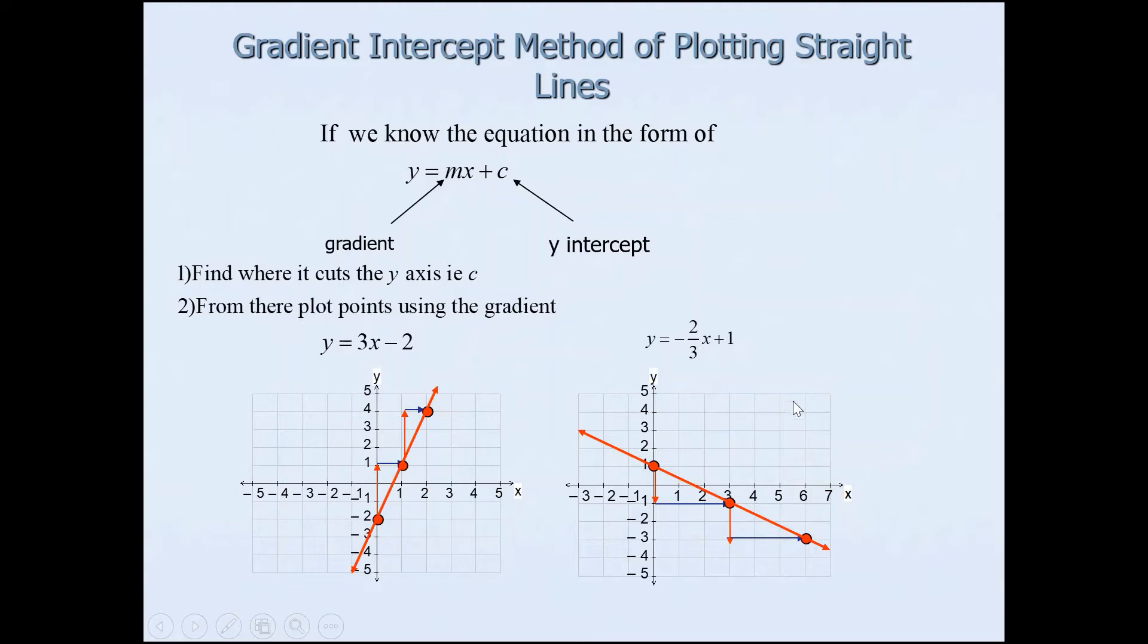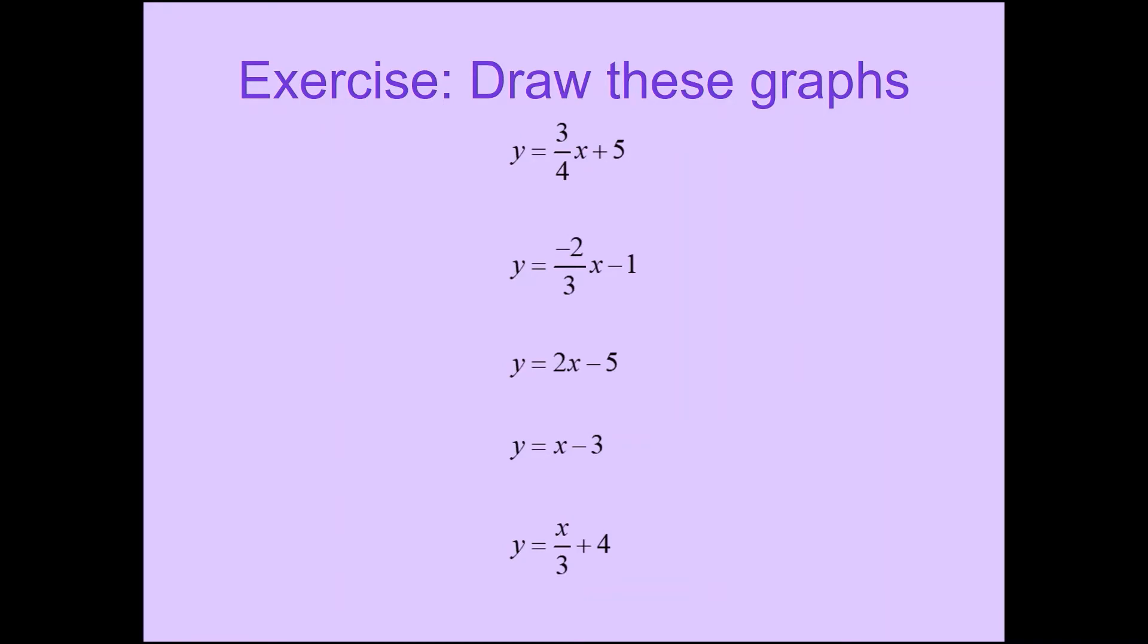You could have already done this using the table of values method but I reckon this is another way of getting the same result. Please pause the video and try and draw these graphs. You can choose either of those two methods as long as you get the right graph that's what matters.